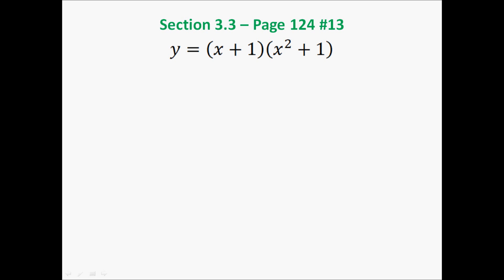The product rule and the quotient rule are things we need to be careful of, because unlike when we're adding or subtracting terms — where you can take the derivative of each individual term separately — when you're doing the product rule or the quotient rule, you can't do that. In this case, where we have some factor times some factor, I am not allowed to take the derivative of this factor and multiply it by the derivative of this factor.